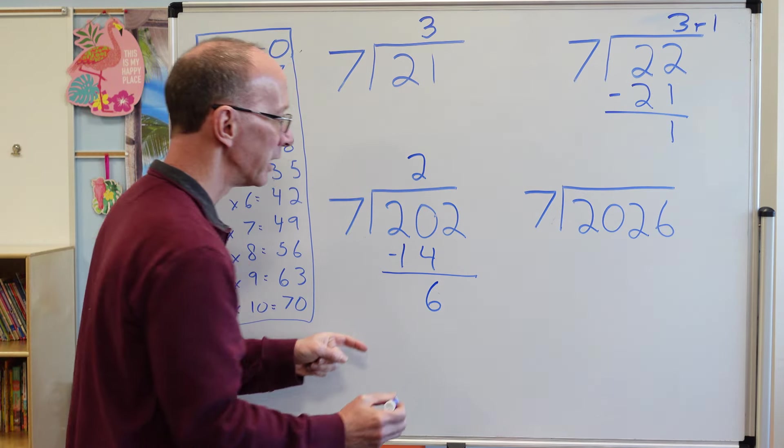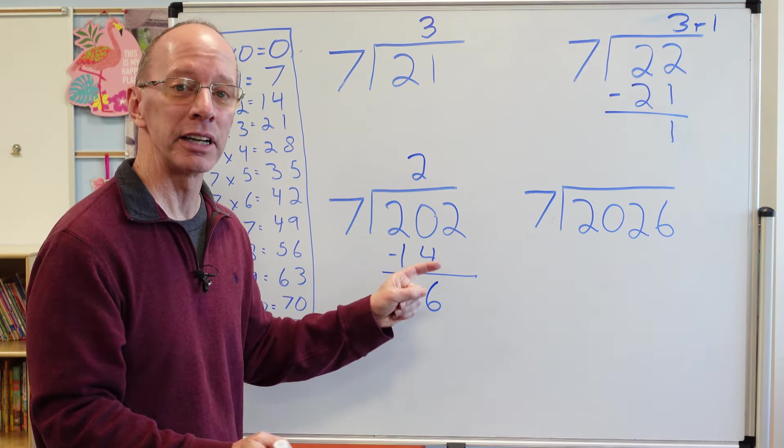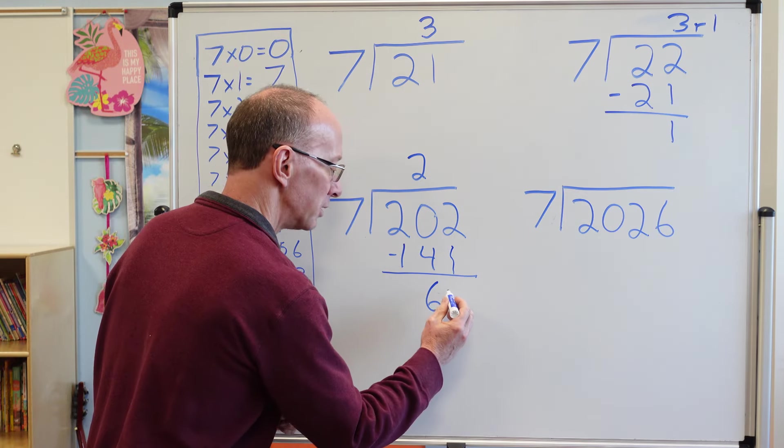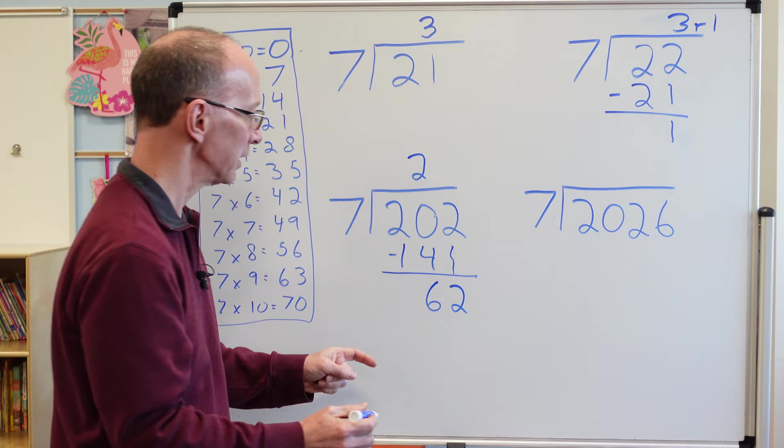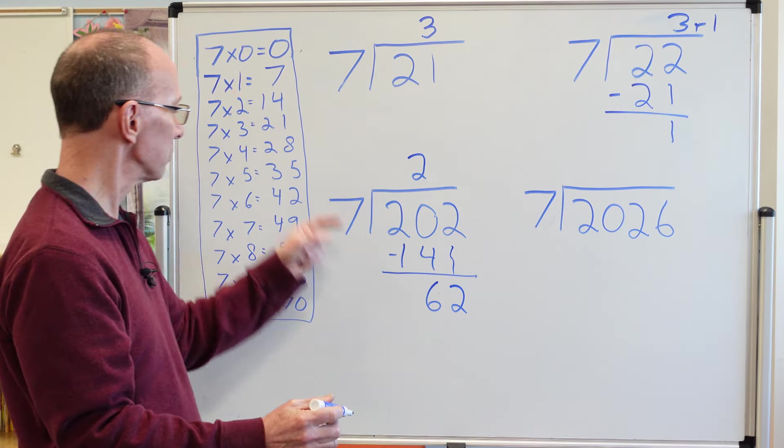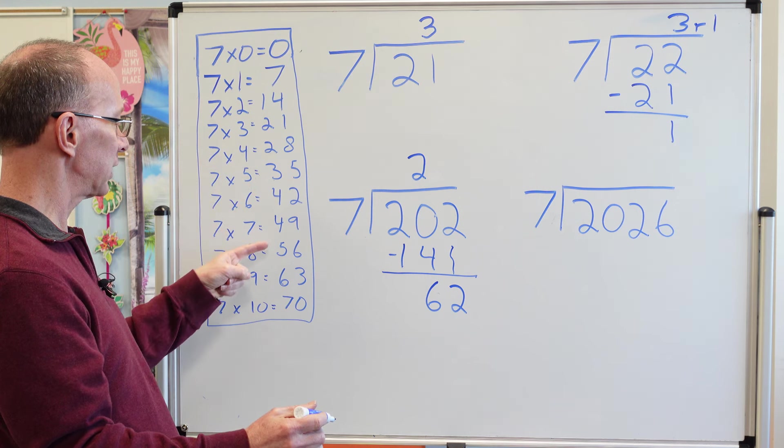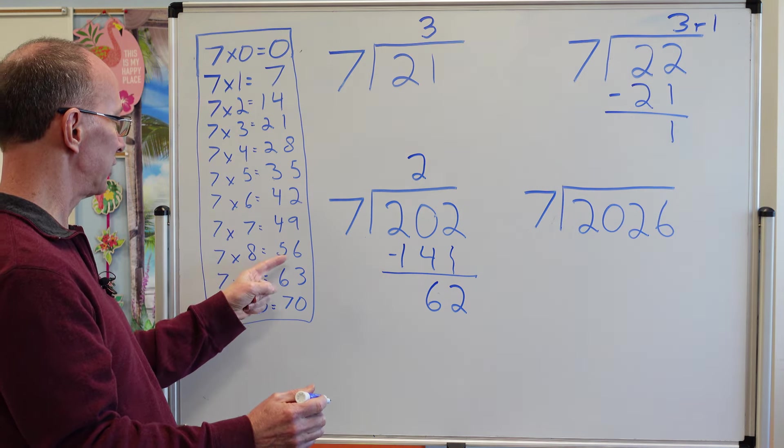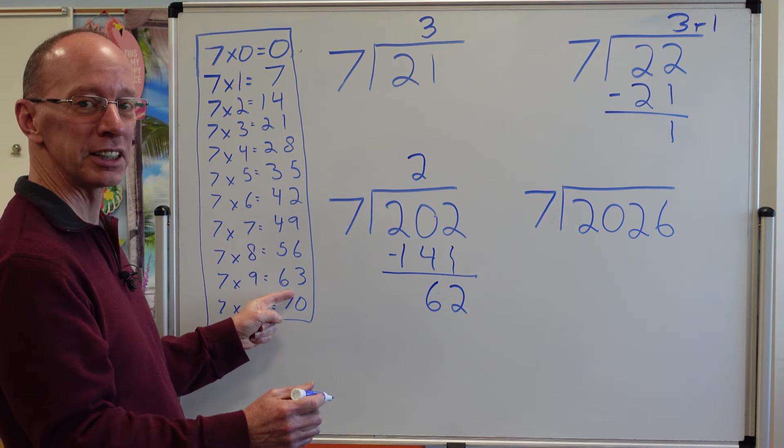Then I bring that next number down. Put that right here. 62. How many times does seven go into 62? Let's look over here. Looks like seven times eight is 56. Seven times nine, 63. Too big.